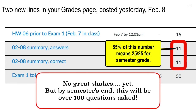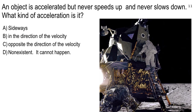I have a clicker question for you — turn on your clicker. We're on frequency BB, bravo bravo. If you haven't used your clicker before, or if you use it for another class with a different frequency, hold the power button down until the rectangle flashes, then type BB. You'll get the Go Nitro message then the Ready message. With that, answer this question: An object is accelerated but never speeds up and never slows down. What kind of acceleration is it?